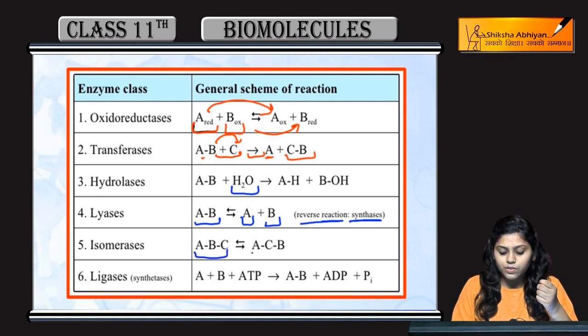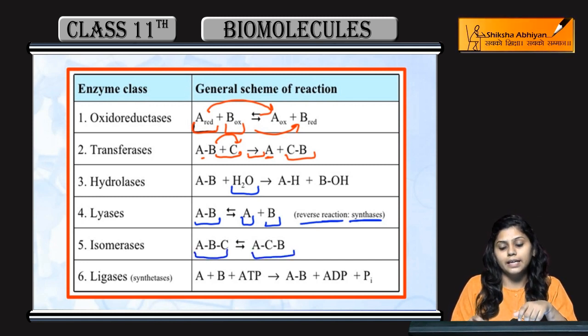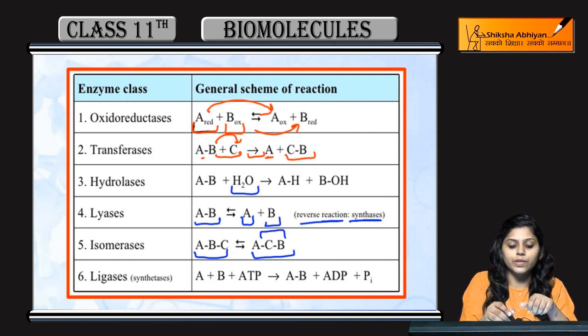Isomerase. Isomers are formed. First ABC and then ACB form. Isomers are formed.